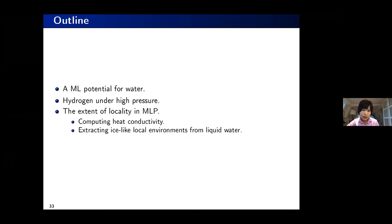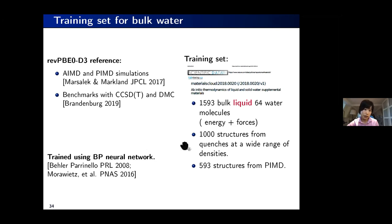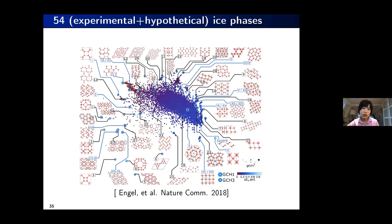For the last part: this is a bittersweet story related to the earlier question about what's in the training set. We have bulk liquid water in the training set of the machine learning potential, but we used the model to compute properties of cubic ice and hexagonal ice, and they worked fine. I wondered how much we can extrapolate. Is it applicable to other ice phases? We took a study that collected many ice phases — all experimentally confirmed ones plus many hypothetical ones — and created a PCA map of the ice phases.